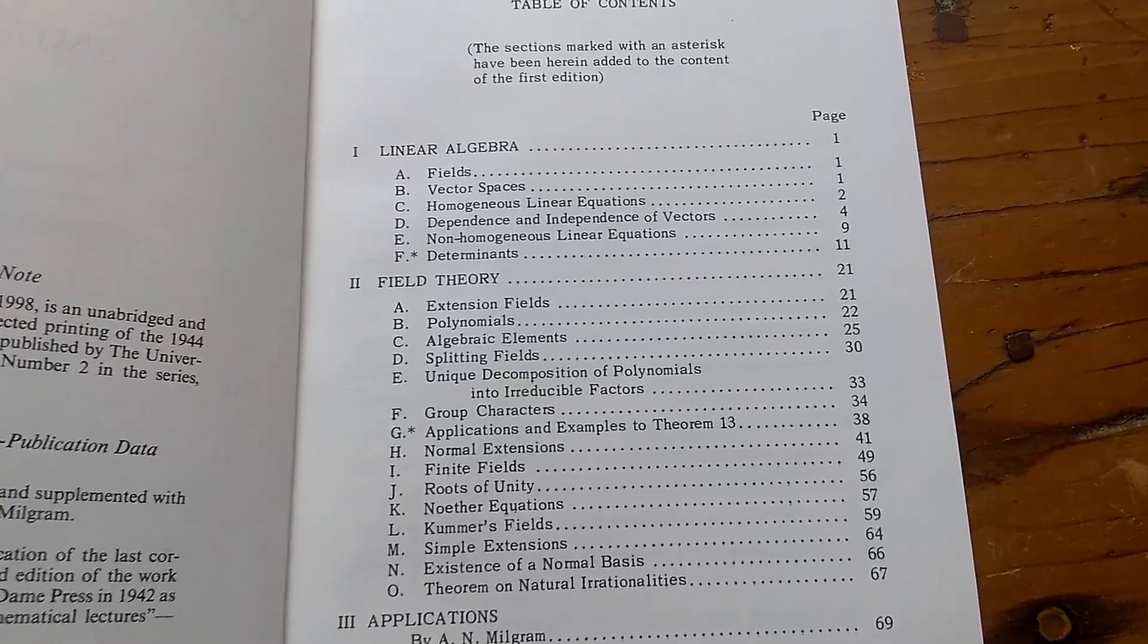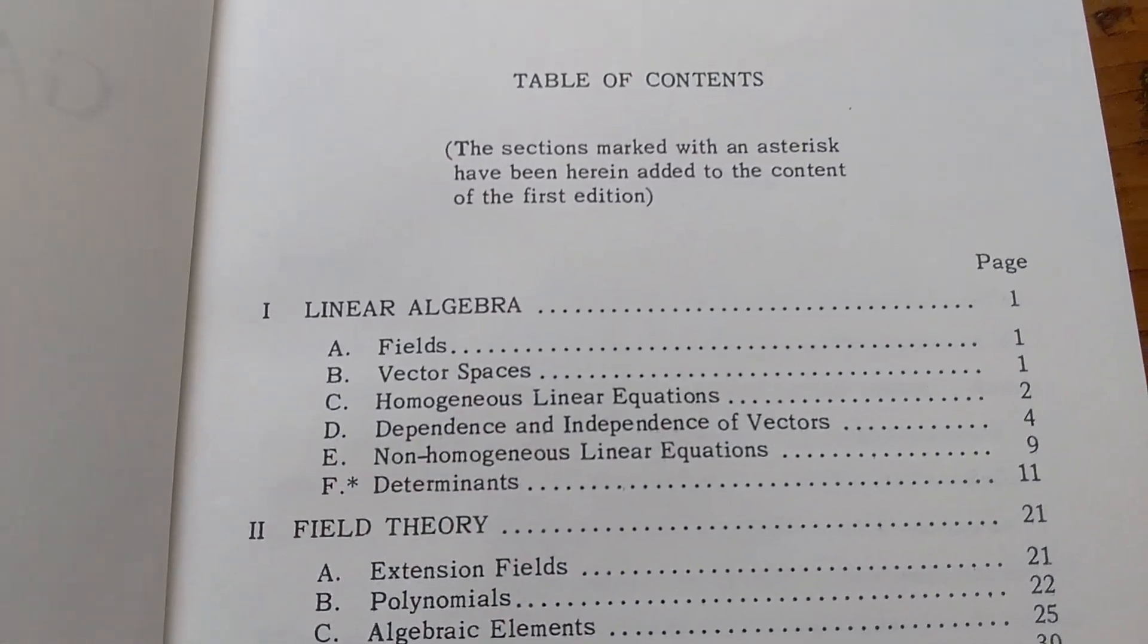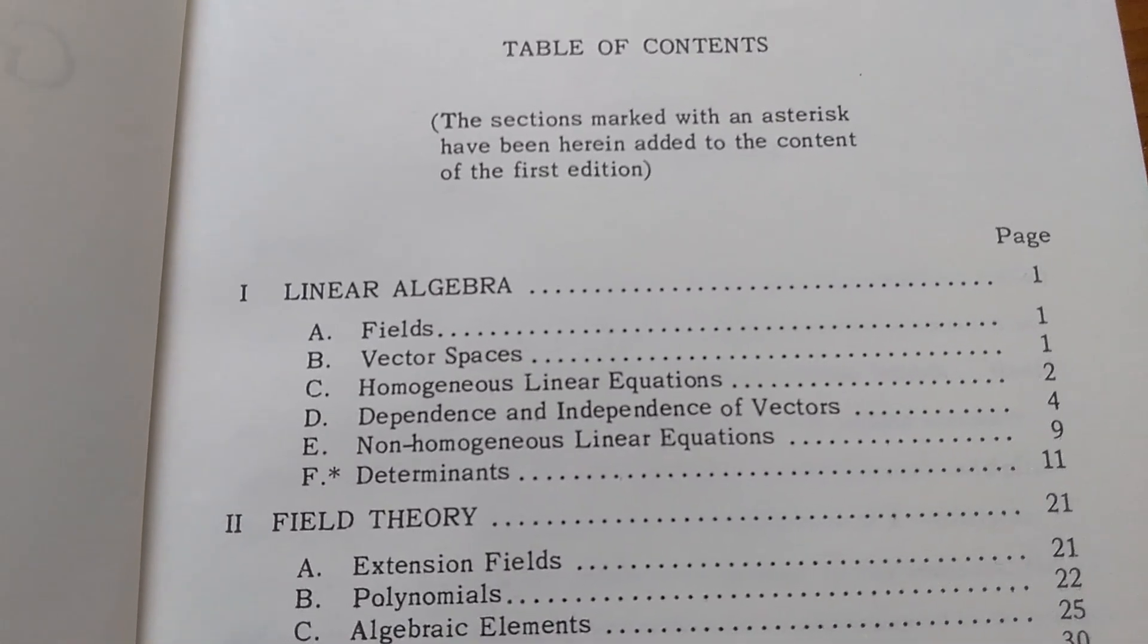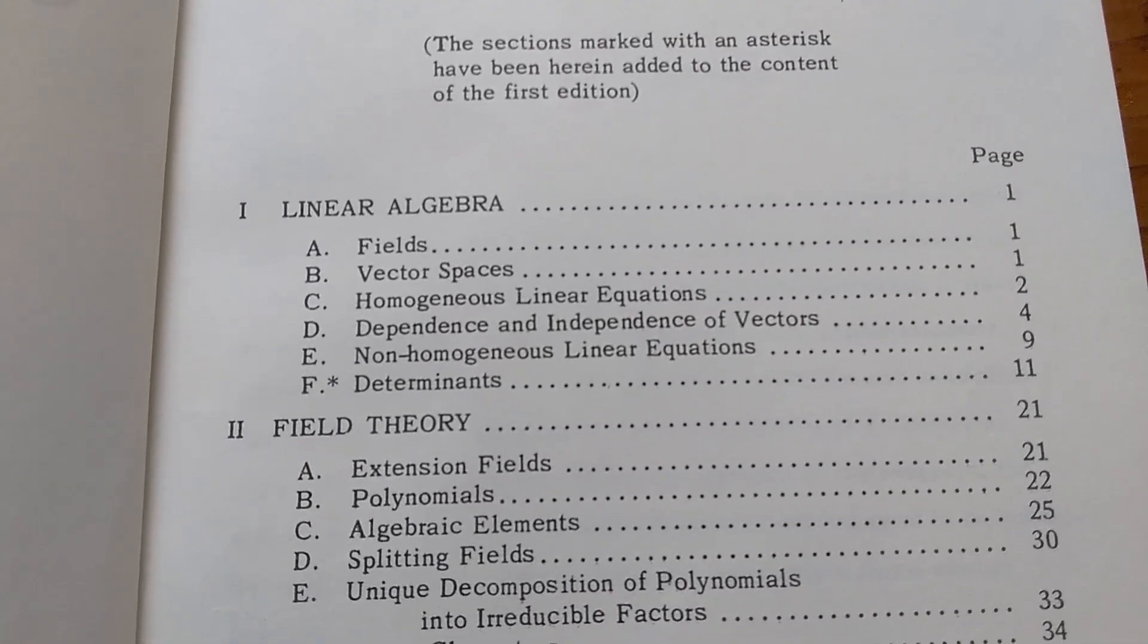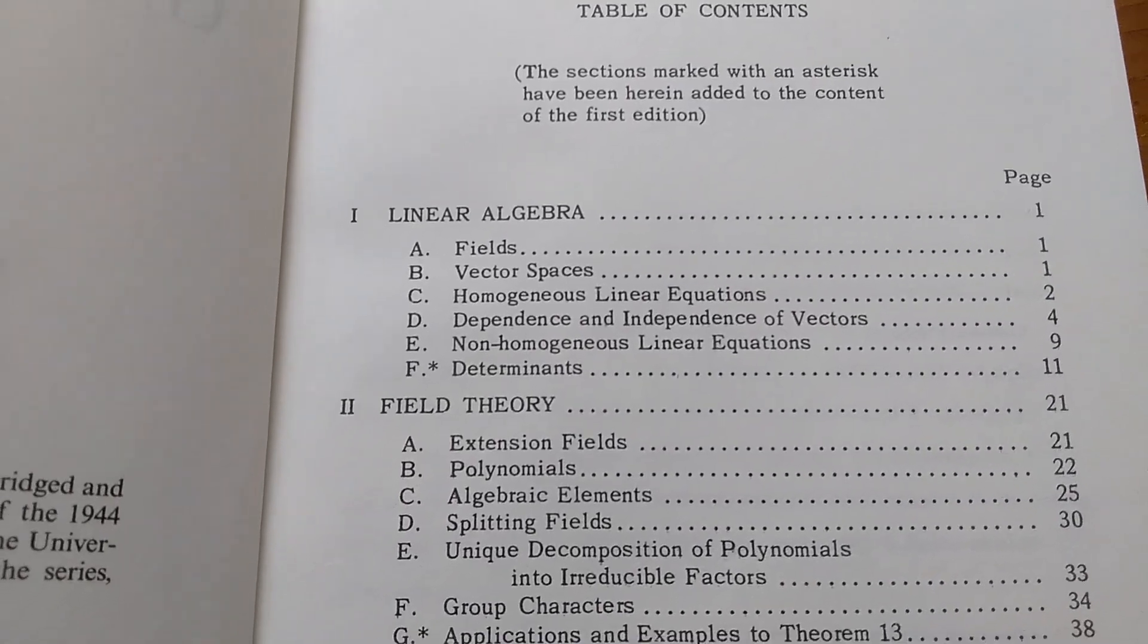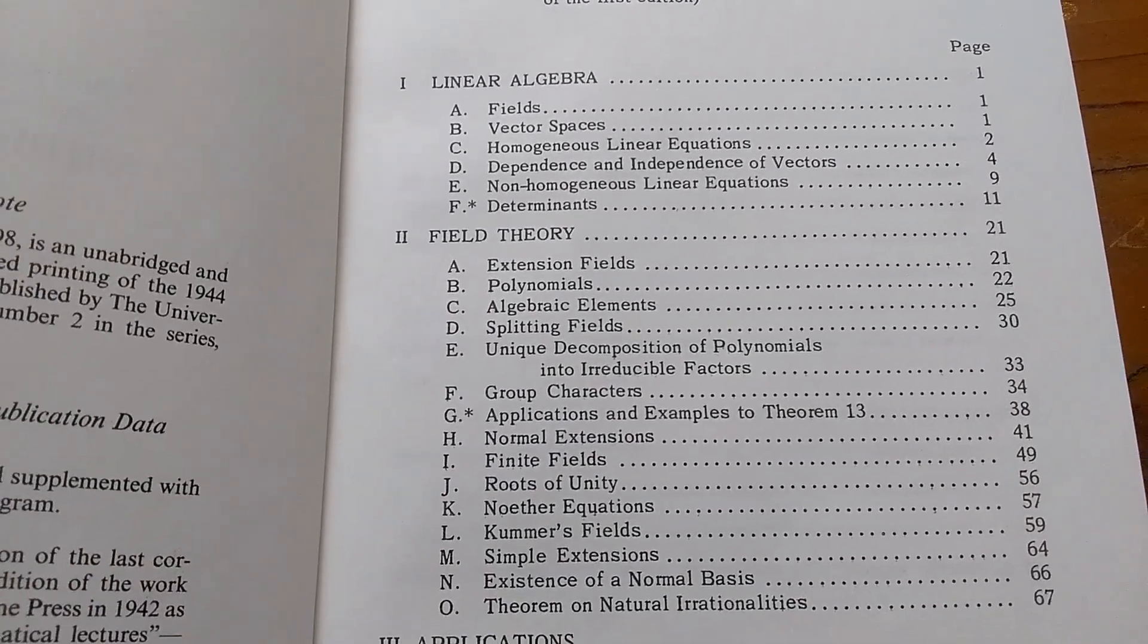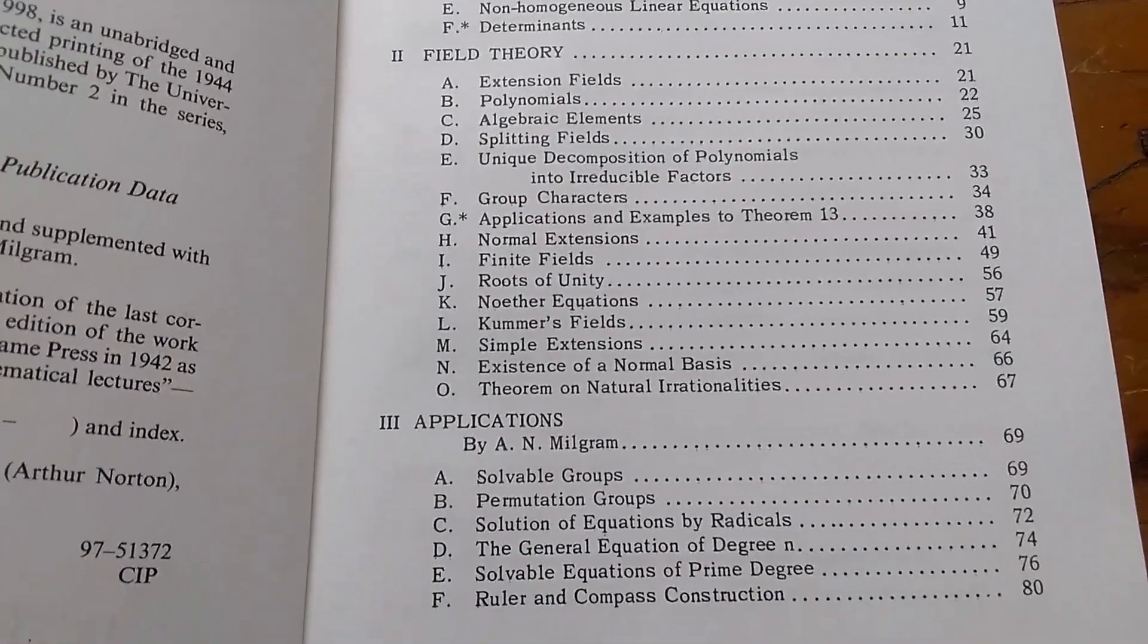This is the table of contents. It starts with linear algebra: fields, vector spaces, homogeneous linear equations, etc. I have read all of the first chapter and most of the second chapter, but not the third chapter.